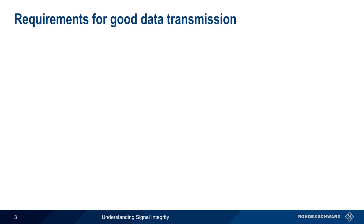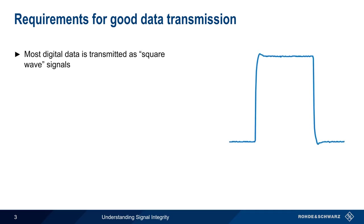In most cases, the signals used for digital data are square wave type signals. As you may already know, these square signals actually consist of multiple frequency components.